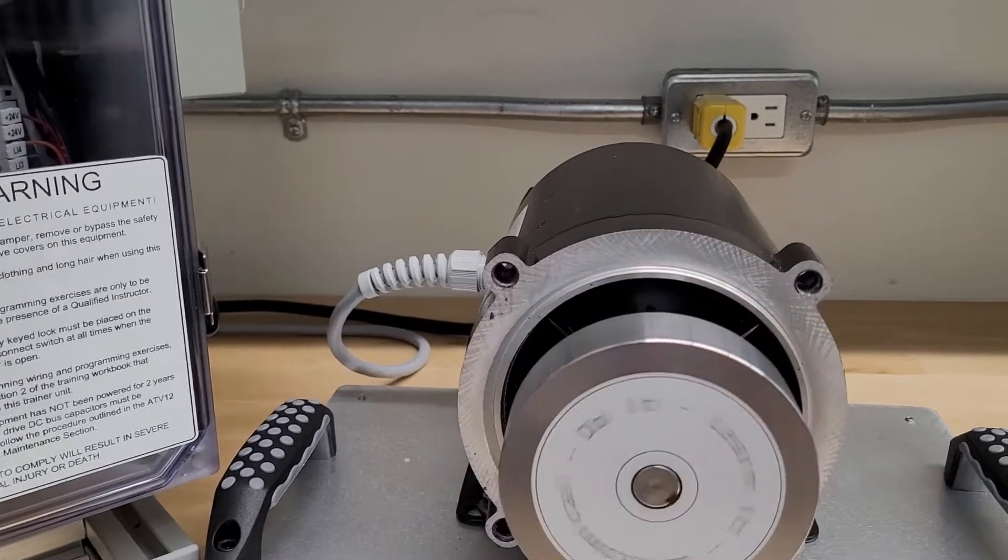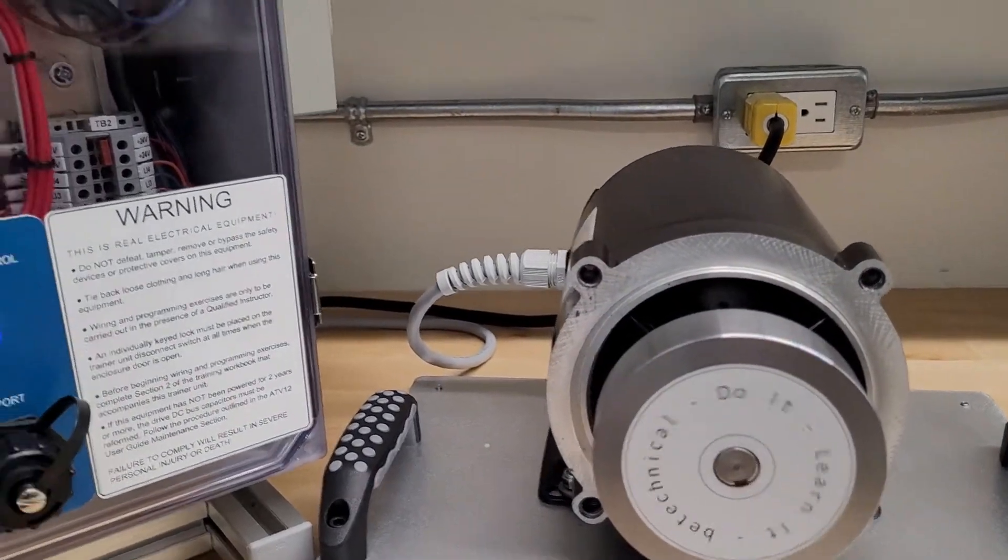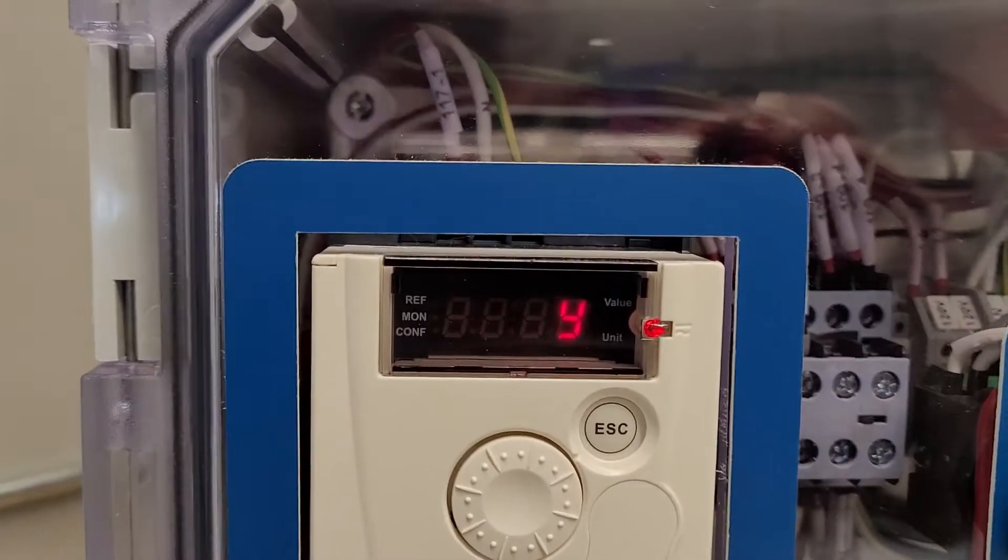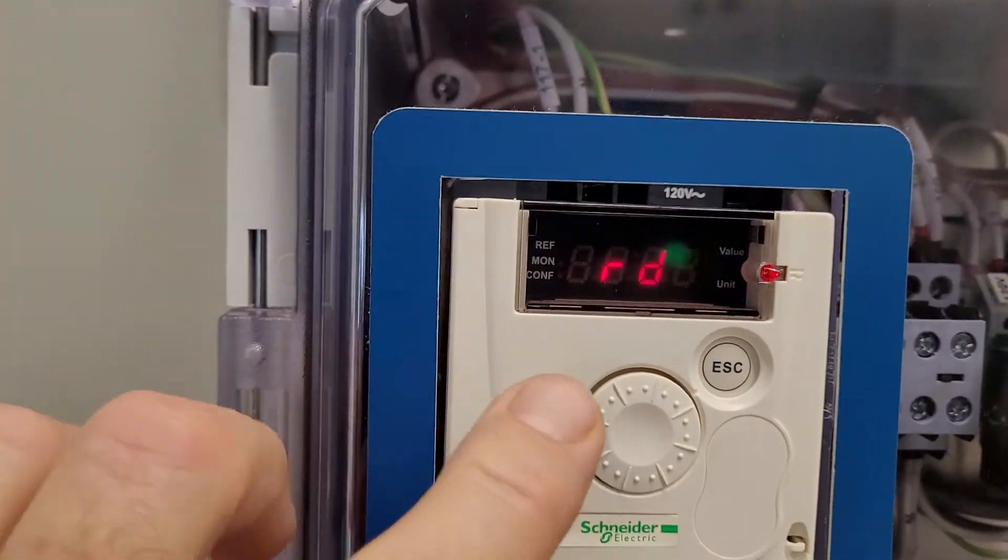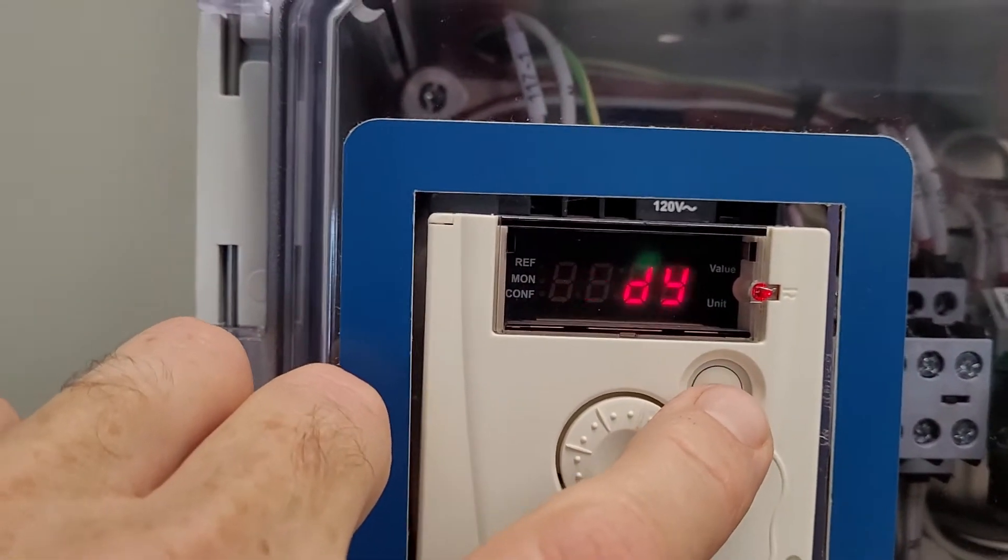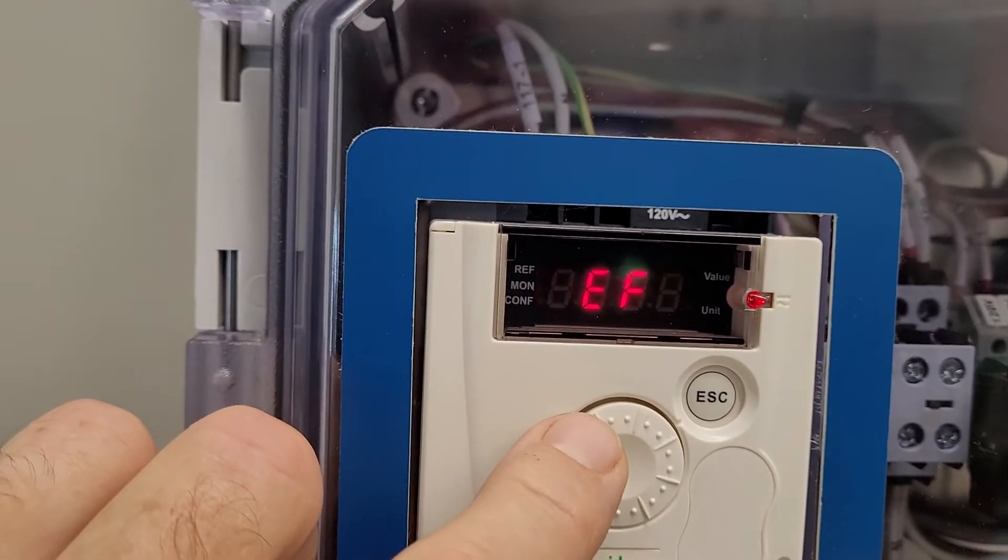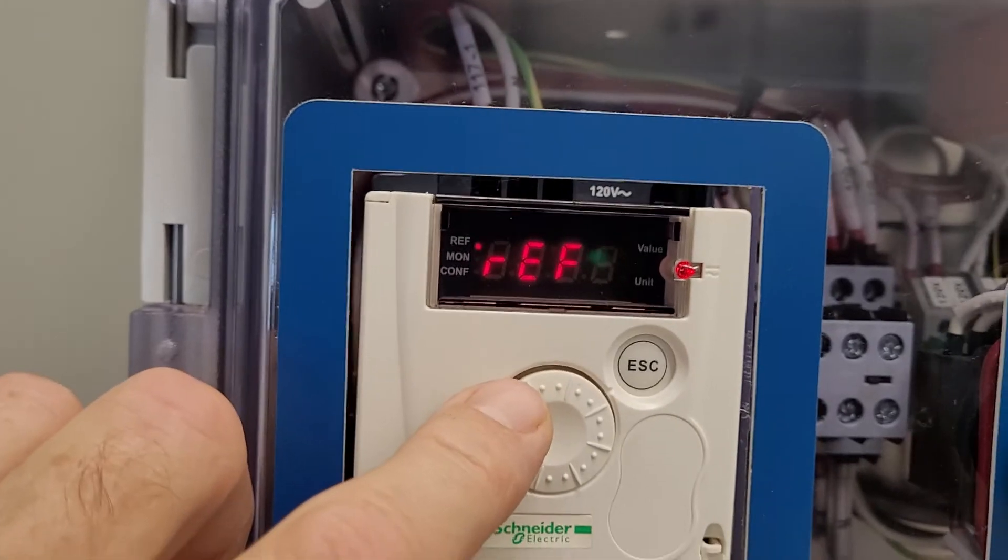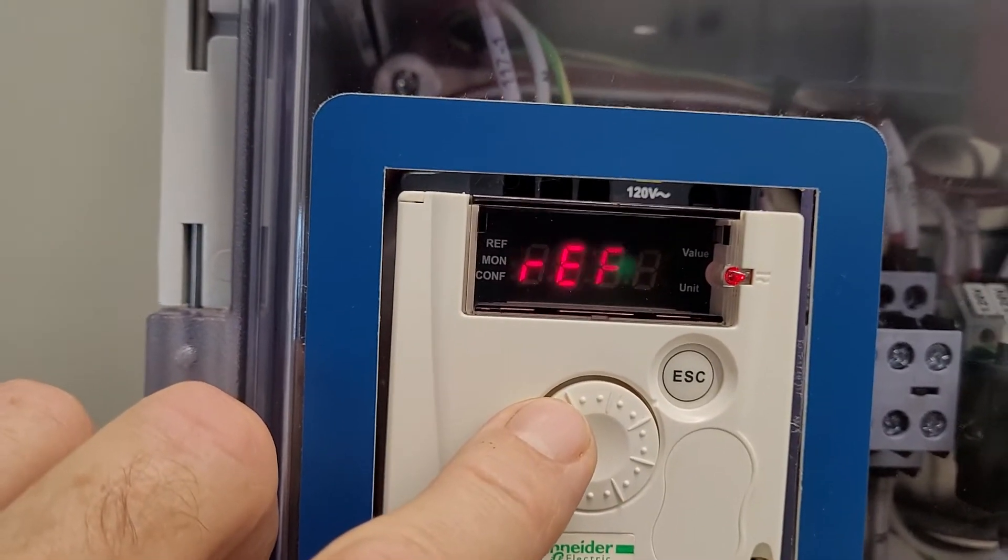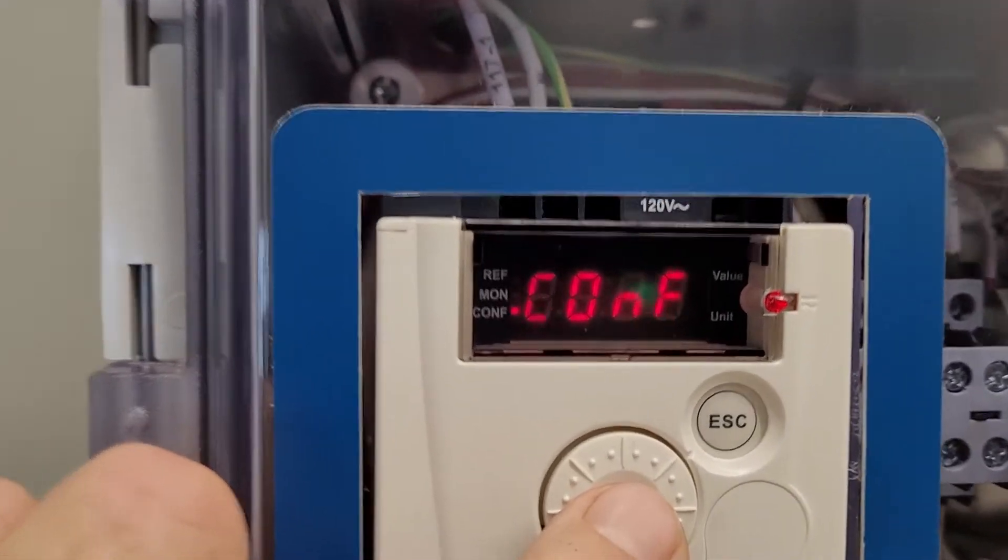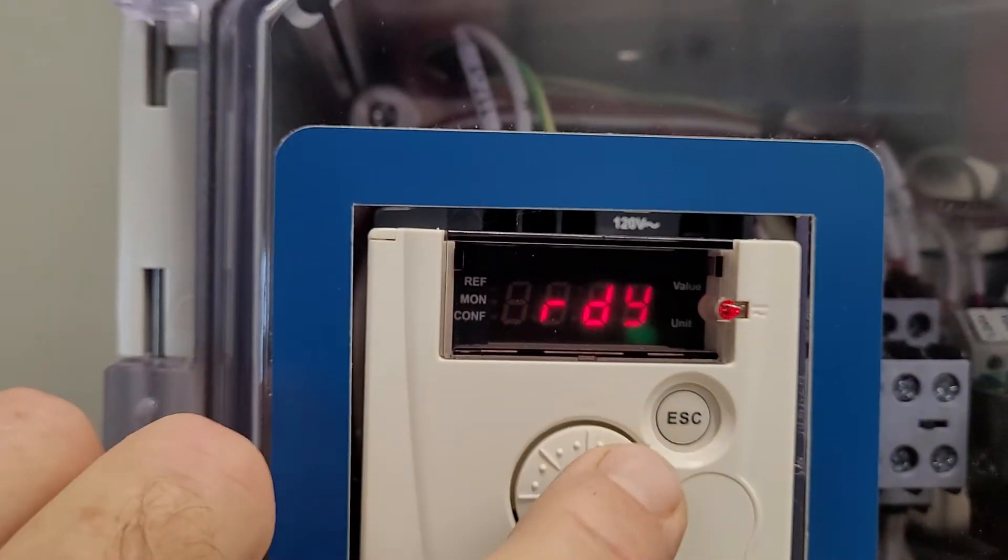See how it freewheels? So what we'll do is we're going to go in and set up automatic DC injection at a standstill, and it'll hold that rotor in place. It's frictionless braking is what it's called when you use it to slow the motor down, but in this case it's just keeping the rotor from freewheeling. So it's just injection at a standstill.